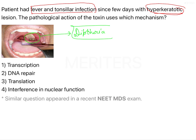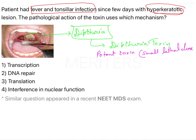In diphtheria, there is a toxin known as the diphtheria toxin. This toxin is very potent, meaning it has a very small lethal dose. The lethal dose is 0.1 microgram per kg.